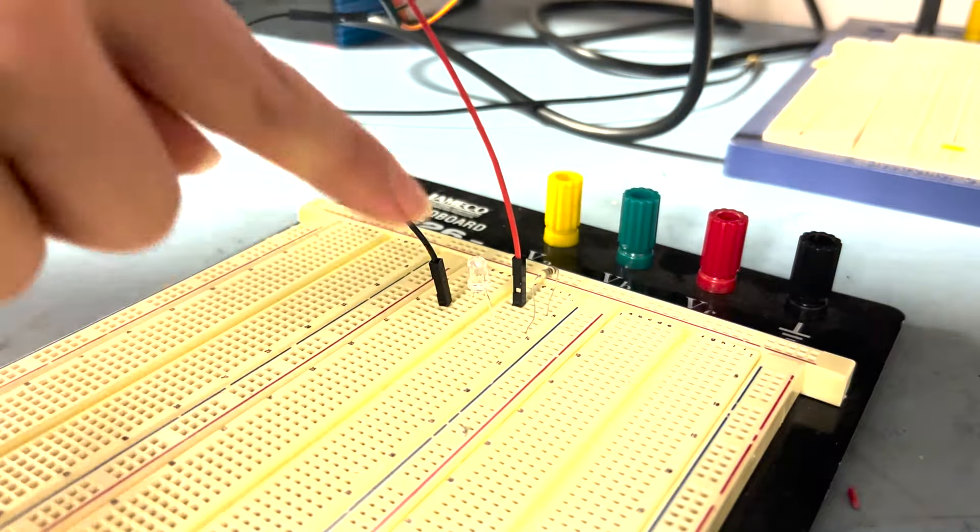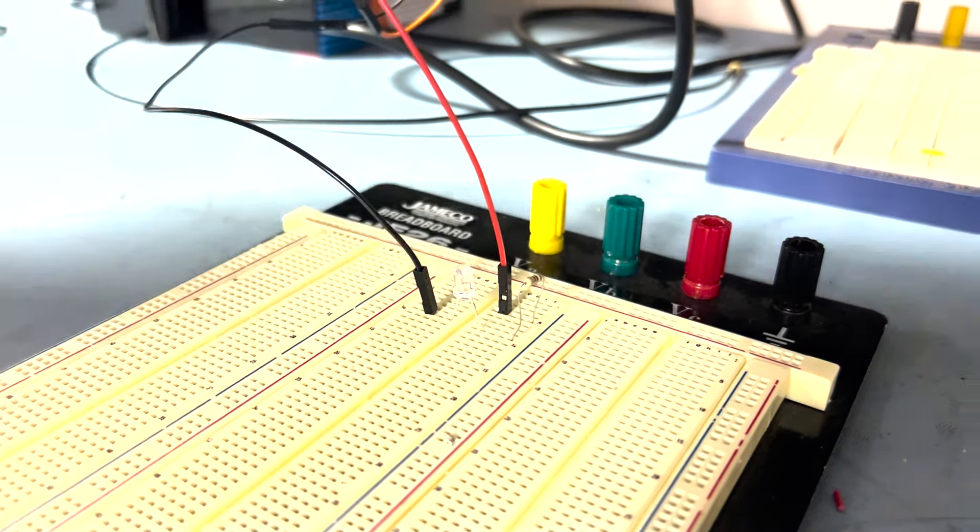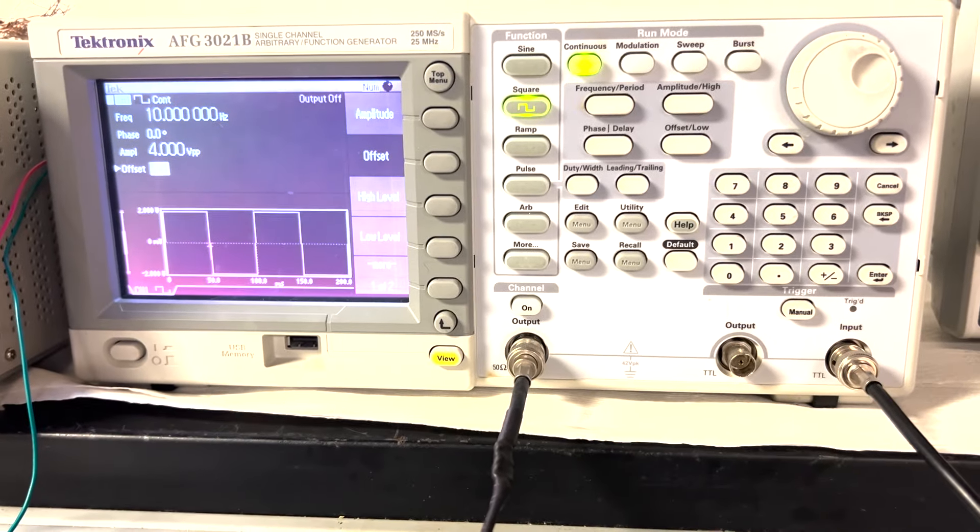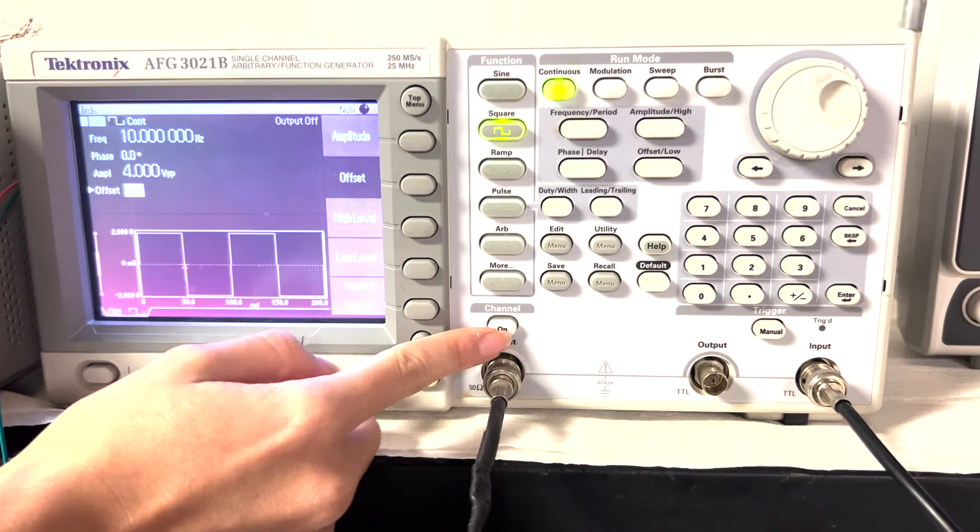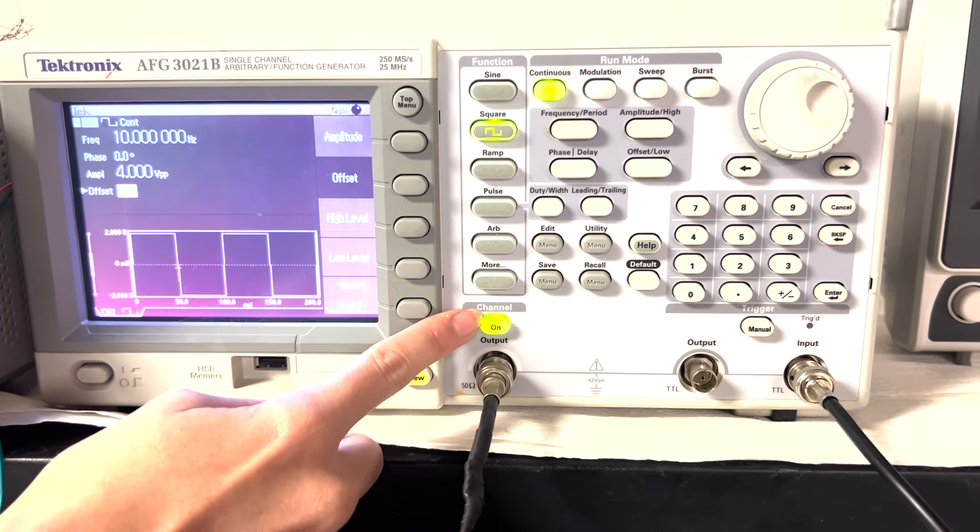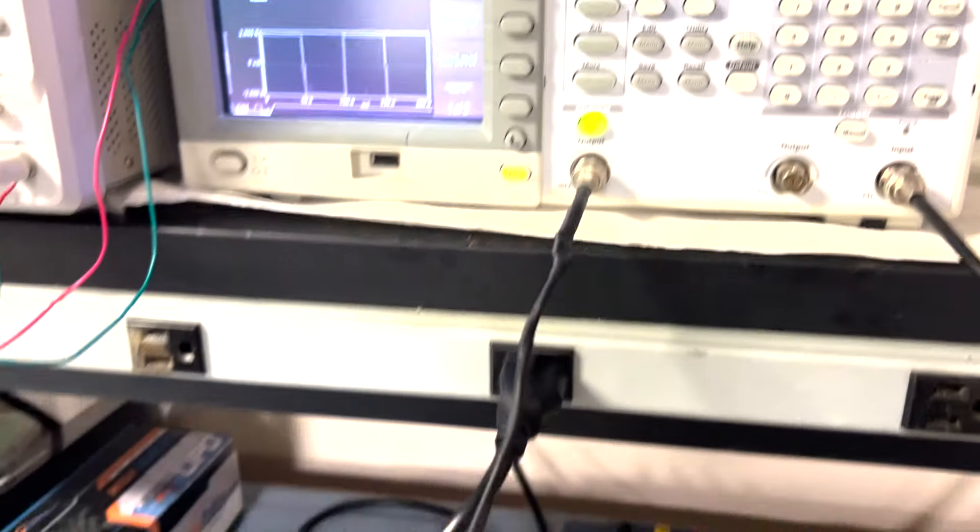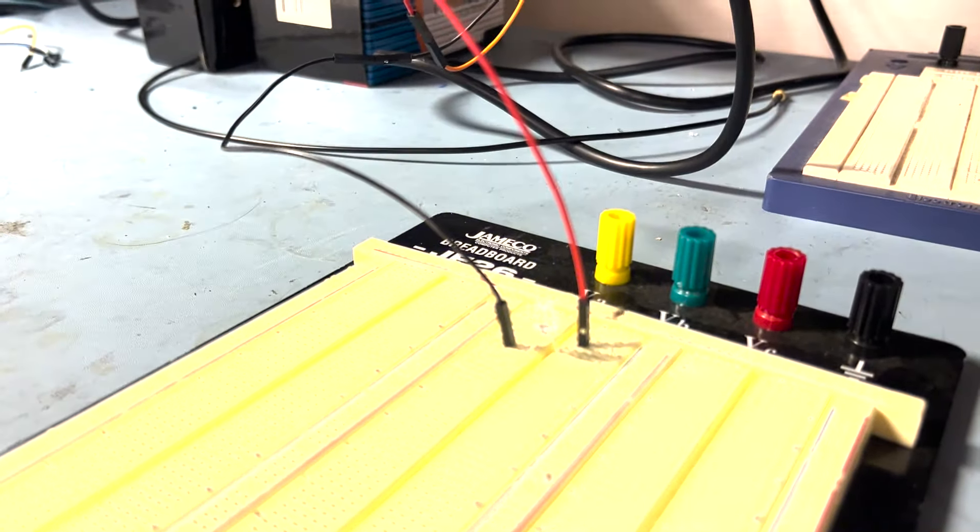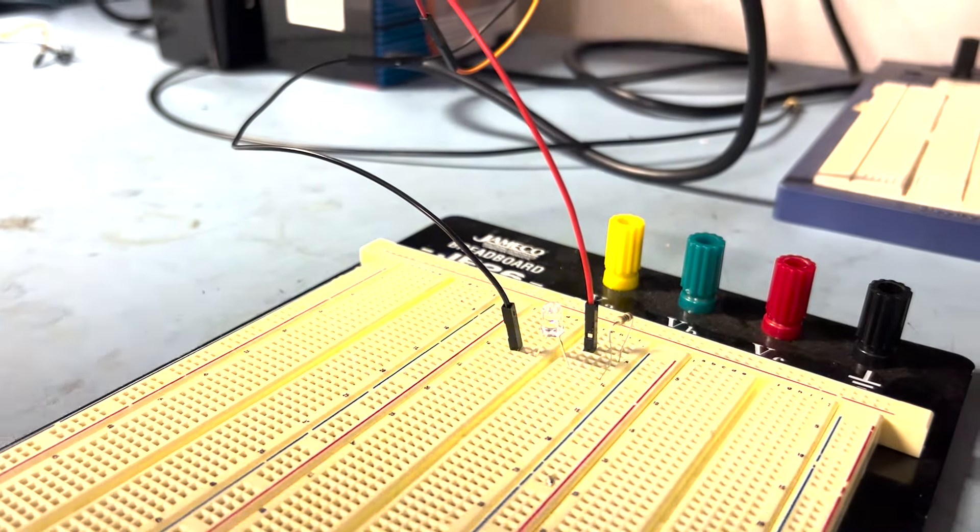You might want to make sure that they're correctly connected. And then after that is done, I can go back to my function generator and I will use this button to turn the channel on. You see how it turns green? That means that the channel is on. And now I go back to my circuit and you see that the LED is on and it's flashing.